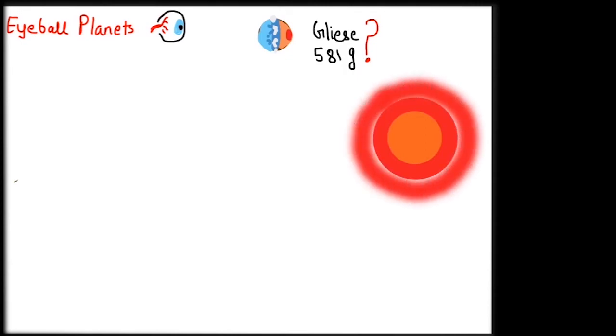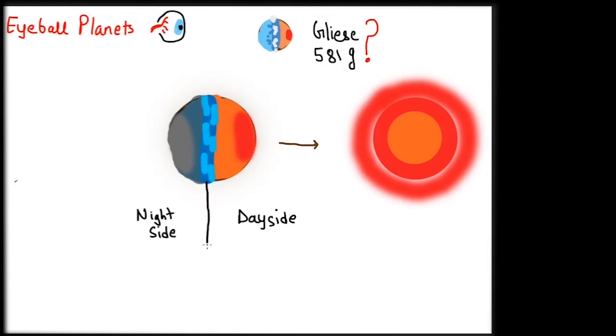These exoplanets are tidally locked to their host star, which means one side receives constant heat and light and is very hot while the opposite side is in constant darkness and is very cold. It is suspected that it is possible that on the boundary of these two extreme halves, called the terminator, the temperature will be warm and right for liquid water. Due to circulation of winds from the hot side to the cold side, global weather can be maintained.